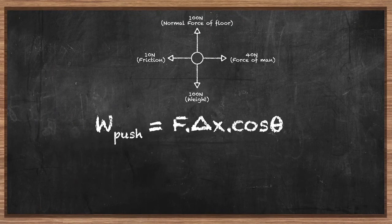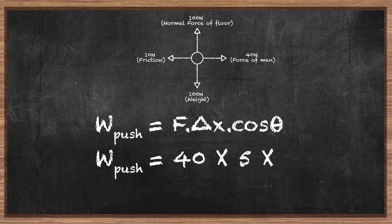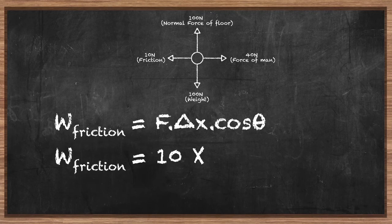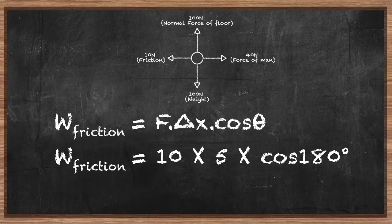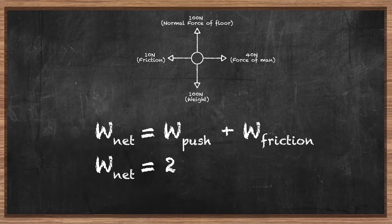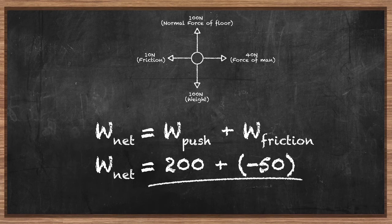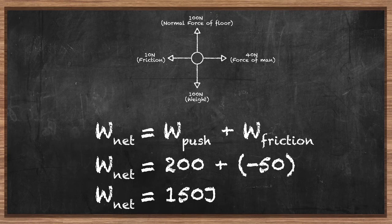The work done by the pushing force W_push equals 40 newtons times 5 meters times cosine zero, giving a positive 200 joules. The SI unit of work is the joule, the same unit used to measure energy. The work done by friction is 10 times 5 times cosine 180 degrees, giving negative 50 joules. The block gains 200 joules from the man's push but loses 50 joules to friction, for a net energy gain of 200 plus negative 50, equalling 150 joules.